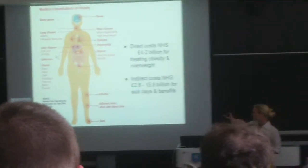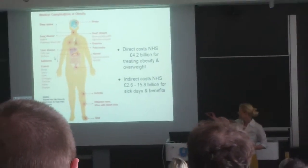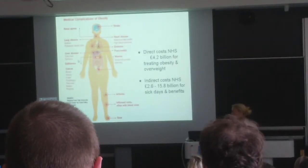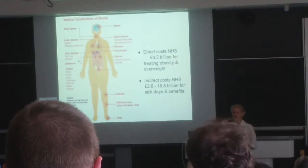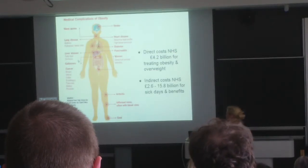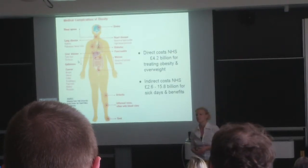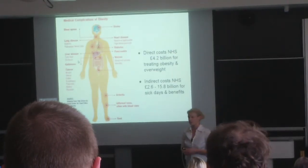We've got immense costs to the NHS. Although figures vary, the estimates for indirect costs to the NHS are between 2.6 to 15.8 billion, plus costs in benefit payments.